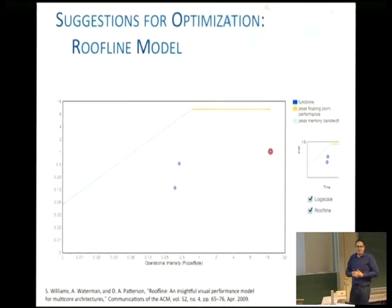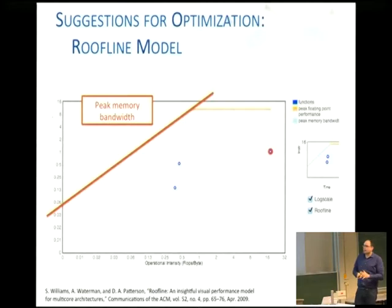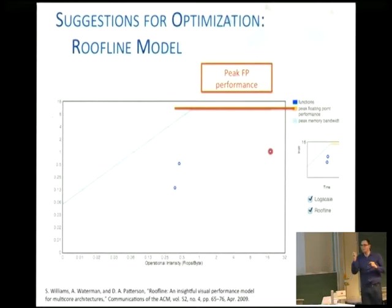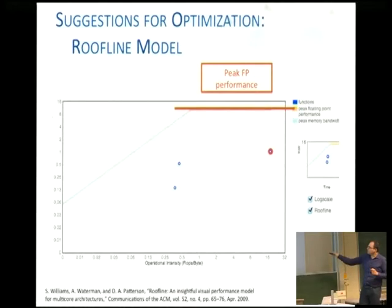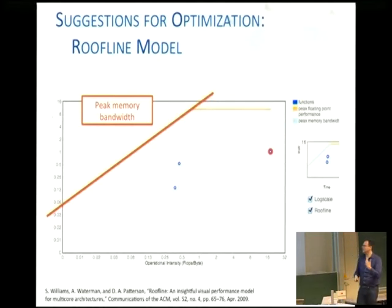I also want to touch on the roofline model — a very interesting model developed in 2009 by David Patterson and others for high-performance computing workloads. The roofline model consists of two components representing the maximum obtainable performance on a node: the peak memory bandwidth line and the peak floating-point performance of your core. Each dot represents a function. The closer we get to the top of this performance or bandwidth number, the closer we are to the theoretical maximum performance of the processor. This methodology lets us determine how well we're doing and whether there's room to grow.